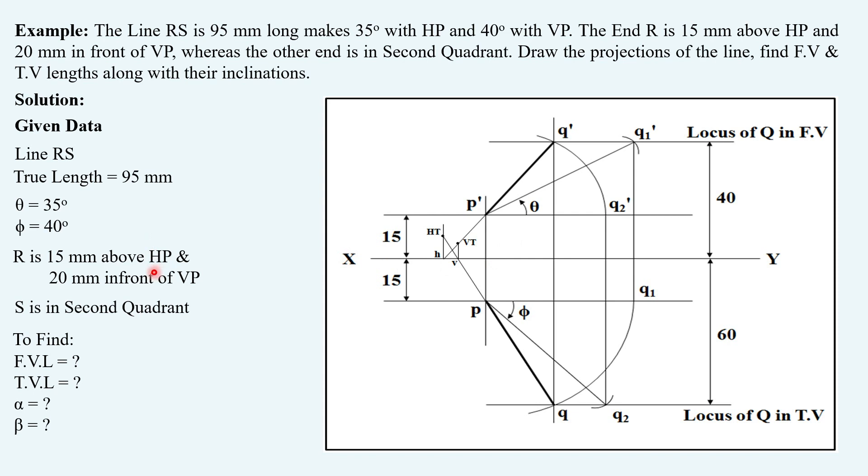We have the line in two different quadrants, one end in first quadrant, second end in second quadrant. So, the position of P' and P here reflects R' and R, that is in first quadrant.